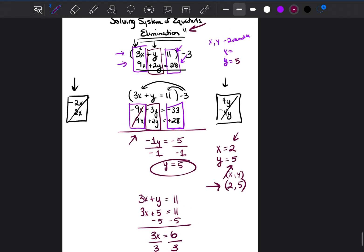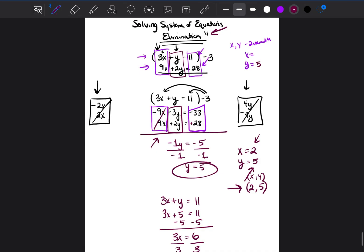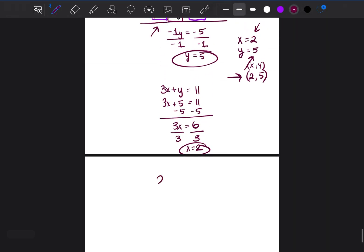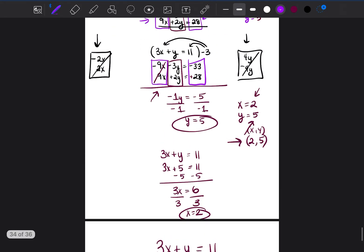Now, if we want to test it to make sure, hey, did we get the right answer or not? Let's go ahead and test it. We could test it by putting the answer for y and the answer for x into the equation. So 3 times 2 plus 5 should equal 11. 6 plus 5 equals 11. That is correct.